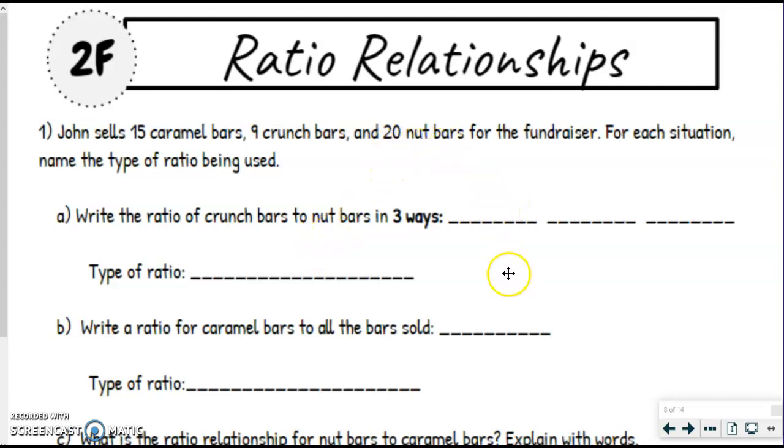To nut bars, which would be 20 nut bars. So the three different ways would be a colon, a fraction, or the word two. You can put those in any order you'd like. You just need to make sure you have all of them, and all of them should have the nine coming first, because crunch bars came first, and 20 should come second, because nut bars were second.